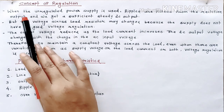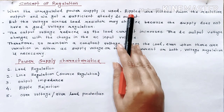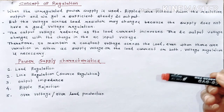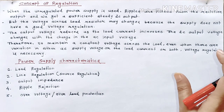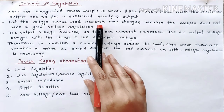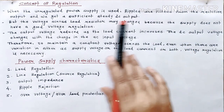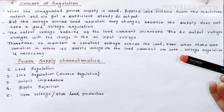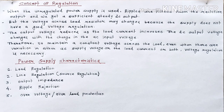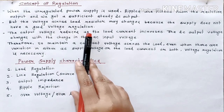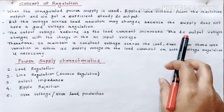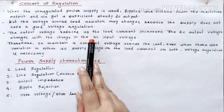Come to the theory portion. When the regulated power supply is used, the ripples are filtered from the rectified output and we get a sufficient DC output. From the filter and rectifier output, we are getting a reasonably good DC response. But the voltage across the load resistor may change because this supply does not have good voltage regulation. The output voltage reduces as the load current increases. This is because of the internal resistance in the circuit.